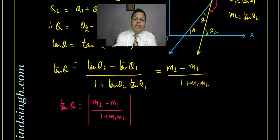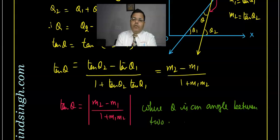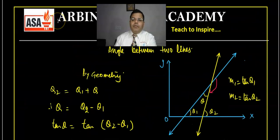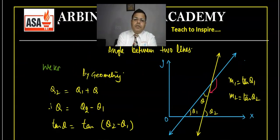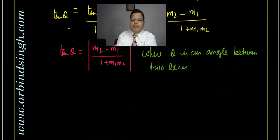So here θ is the angle between the two lines, and the formula is: tan θ = |m2 - m1| / (1 + m1·m2). This is the formula for the angle between two lines, derived by geometry.